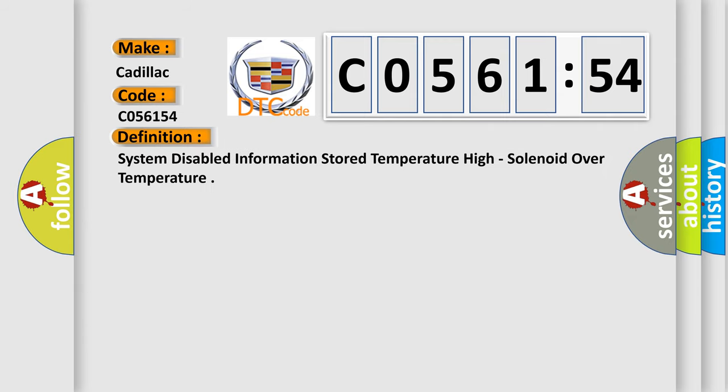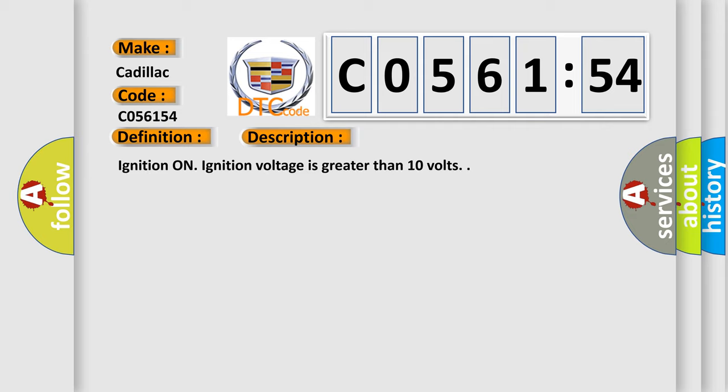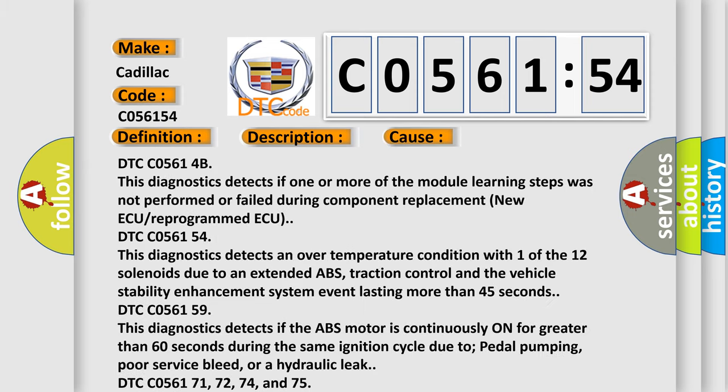The basic definition is system-disabled information stored temperature high, solenoid over temperature. And now this is a short description of this DTC code: ignition on, ignition voltage is greater than 10 volts. This diagnostic error occurs most often in these cases.